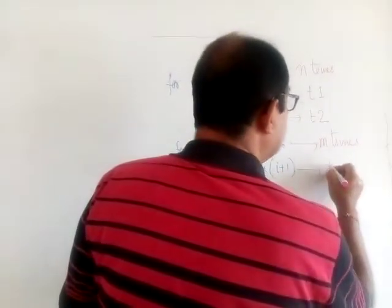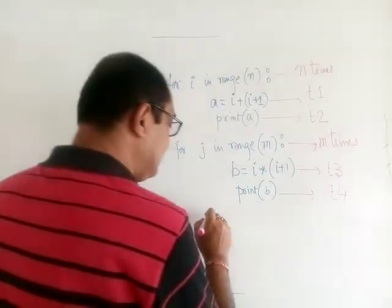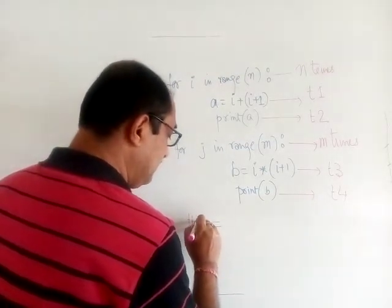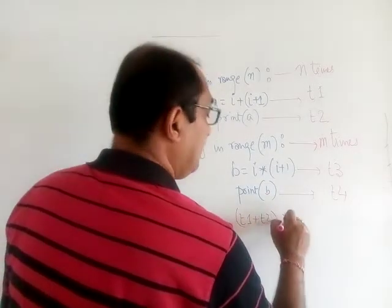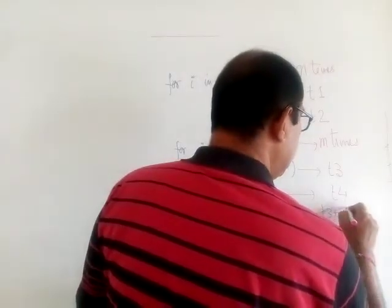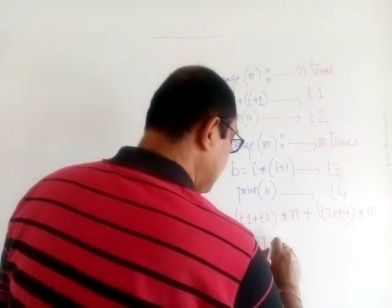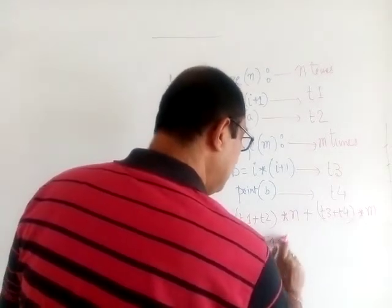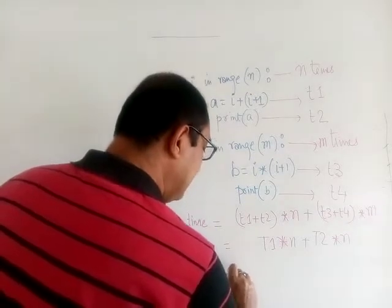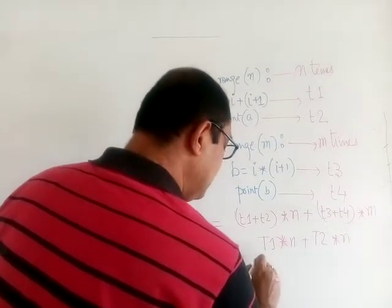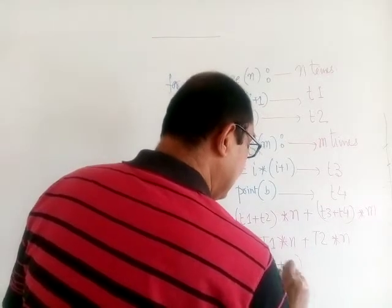t1 constant amount of time, this one takes t2 constant amount of time. This loop again executes m times. This one takes t3 constant time, this one takes t4 amount of constant time. So what we get: the total time will be equal to t1 plus t2 multiplied by n and t3 and t4 multiplied by m. So as a whole we can write capital T equals n, and we can write t2 into n.